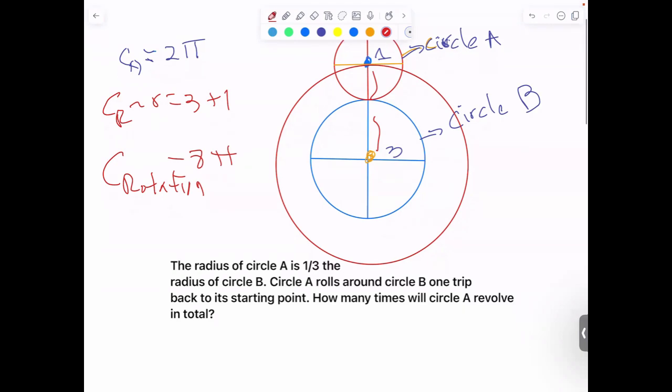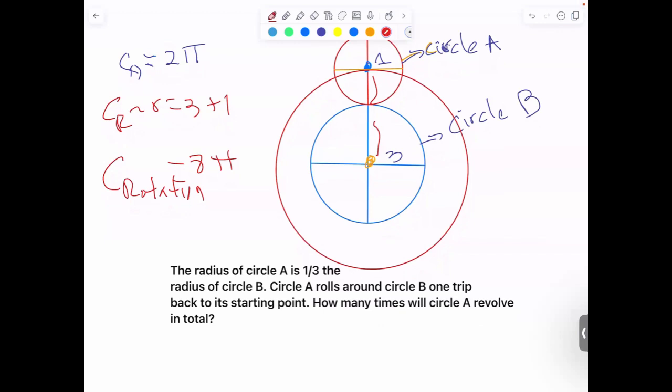And that's very simple because how many times does 2π go into 8π? 8π divided by 2π, we get 4. The answer is 4. Very simple.